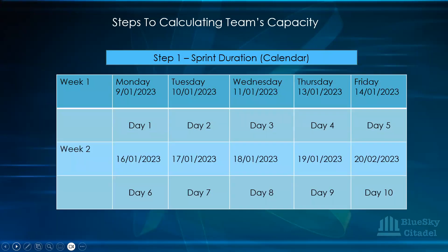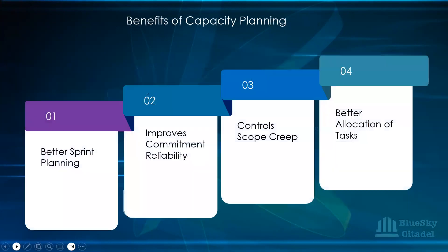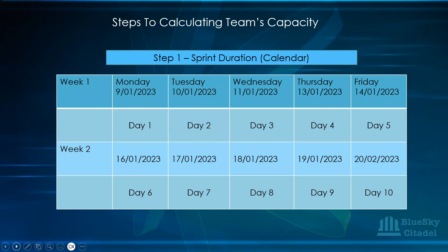Now let's look at the steps of calculating your capacity. The first step is to look at your calendar and sprint duration. This example uses a two-weekly sprint, which is what you'll have in practice — that's 10 days: Monday to Friday for two weeks. That's the first step: get your calendar and know the duration of your sprint.